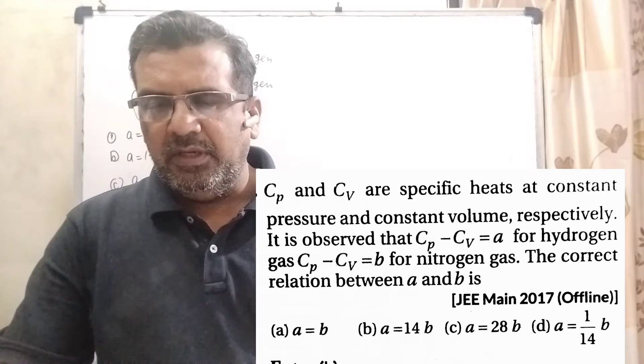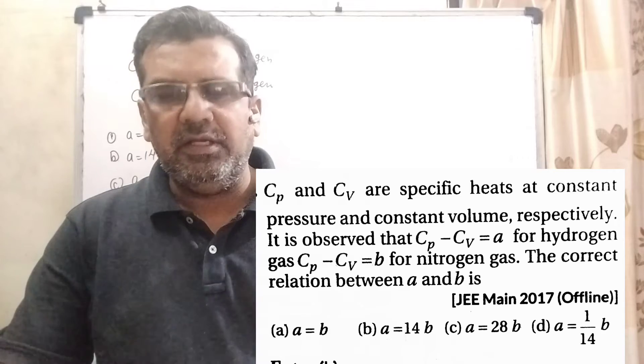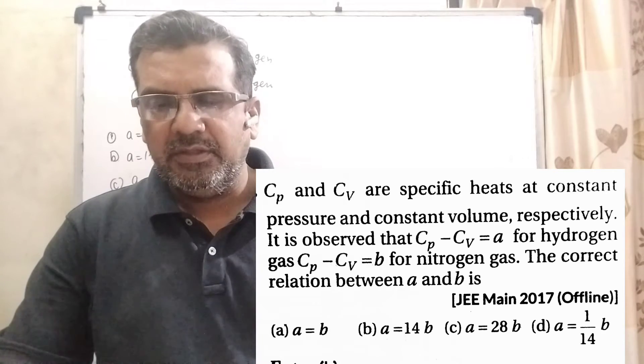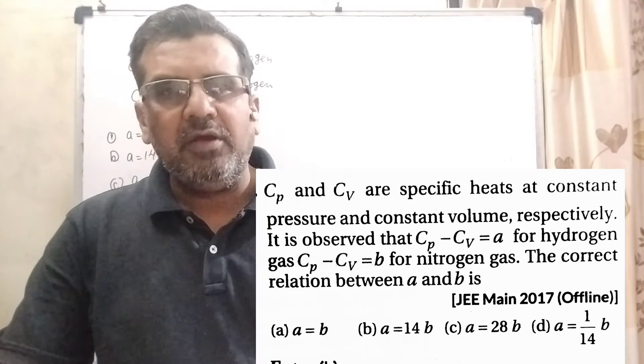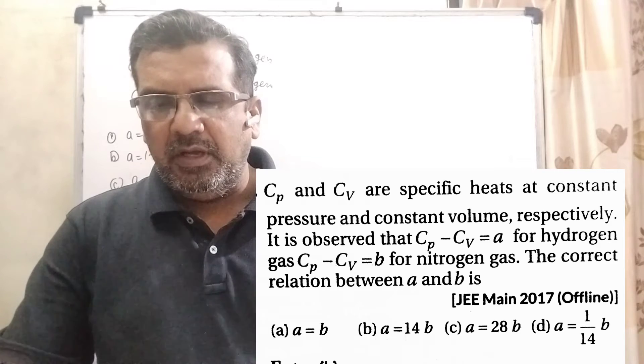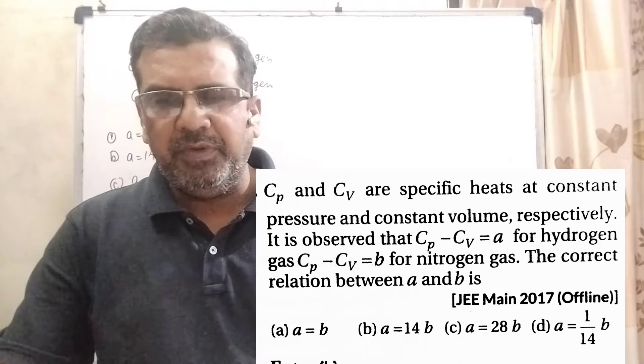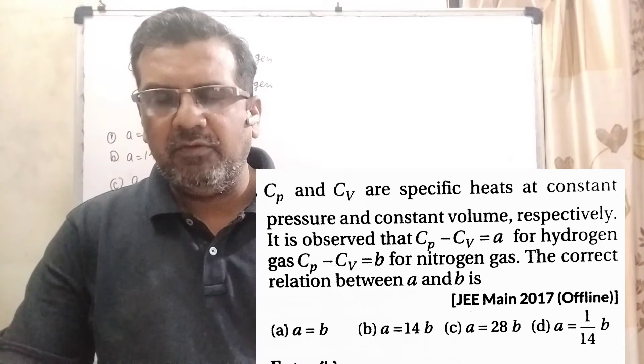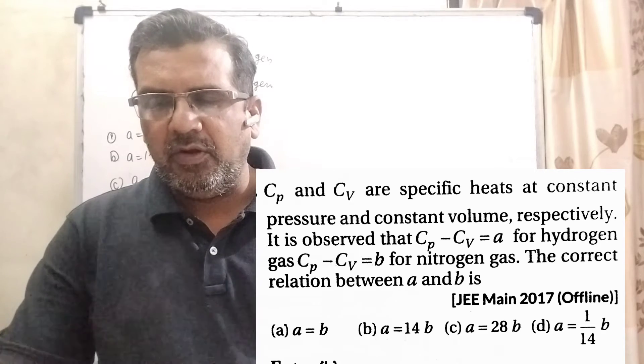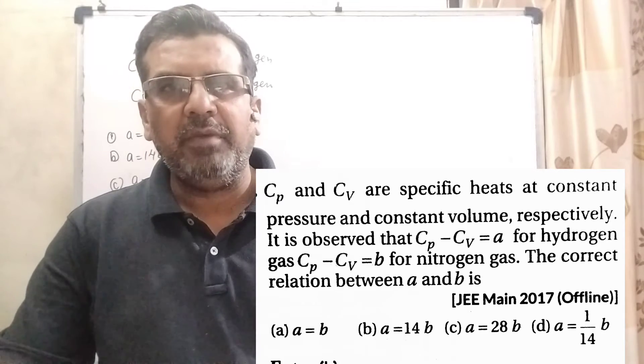The correct relation between A and B is - here we have given 4 options. Option A: A equal to B. Option B: A equal to 14B. Option C: A equal to 28B. Option D: A equal to 1 by 14B.